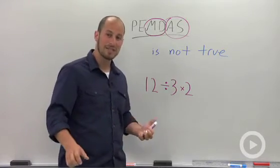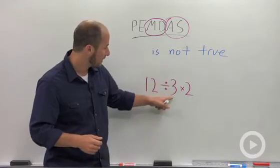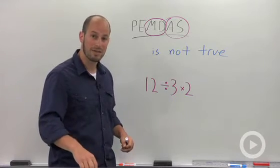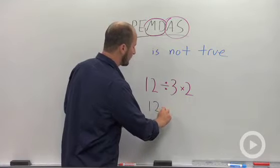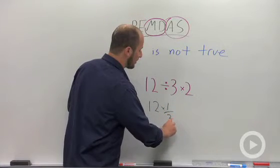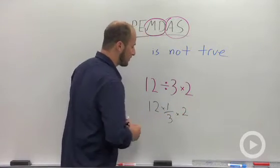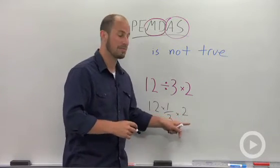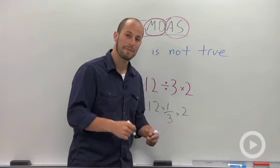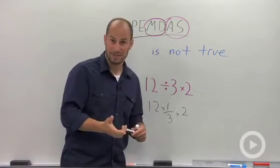However, what you need to remember is that dividing by 3 is the same thing as multiplying by 1/3. So by just rewriting this as multiplication, what we've done is 12 times 1/3 times 2. What we get in this case is 12 divided by 3 is 4 times 2 is 8. So 8 is actually the right answer for this problem.